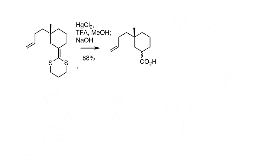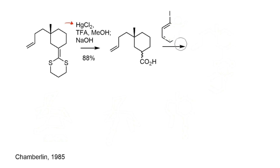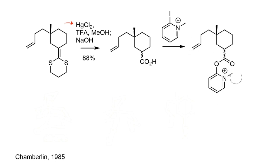Returning to the clovene synthesis, the next step is decomposition of the ketene thioacetal to reveal the carboxylate. Funk and co-workers used mercury salts to accomplish this — a common way to decompose thioacetals — following a procedure from Chamberlain in 1985. The next step was to convert the carboxylate into a ketene. Normally you'd do this via the acid chloride with triethylamine elimination, but Funk found that reaction inconsistent. Instead, the reagent of choice was a 2-iodopyridinium salt — the carboxylate adds at the electrophilic position to give an activated carboxylate, a proton is lost by elimination, and the pyridone serves as leaving group to generate the ketene.